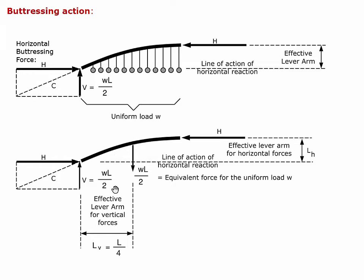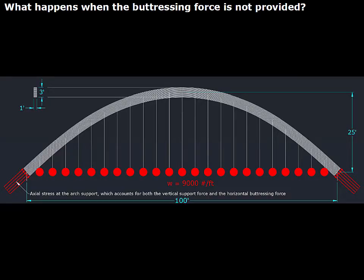WL squared over 8 is the inevitable moment applied because we are spanning rather than getting support directly under the load. That's a clockwise moment. The two horizontal forces produce a counterclockwise moment equal to H times their lever arm L_H. So we can find H by setting H times L_H equal to WL squared over 8. That explains the behavior of an arch.